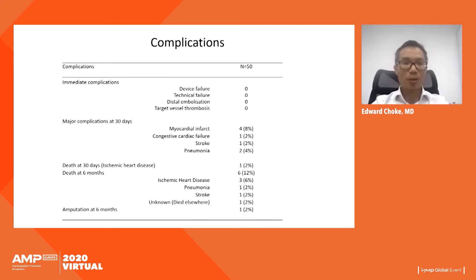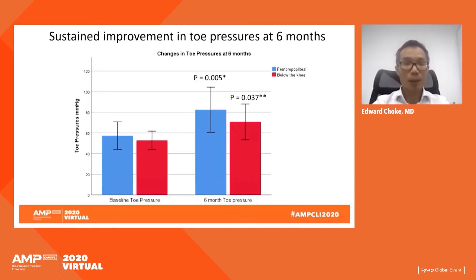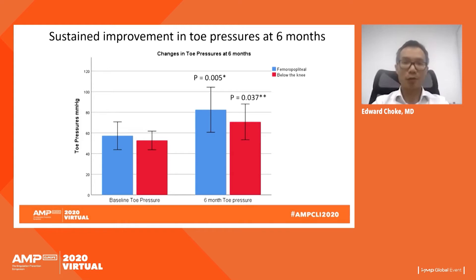At six months, there was one major limb amputation of the target lesion. In terms of toe pressures at six months, we saw a sustained and statistically significant improvement in both the femoral-popliteal and below-the-knee groups.